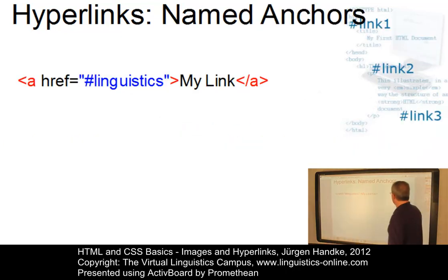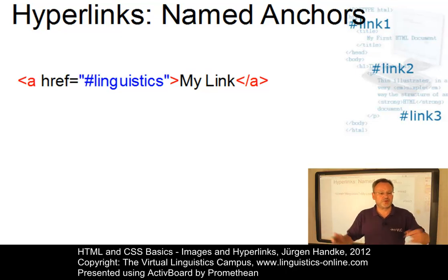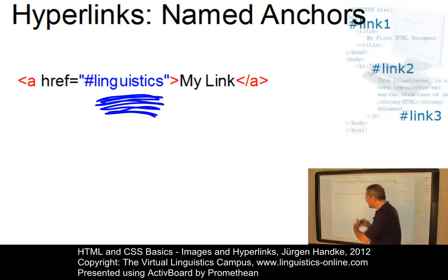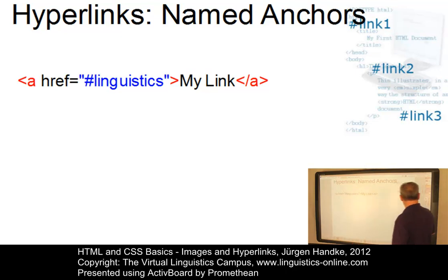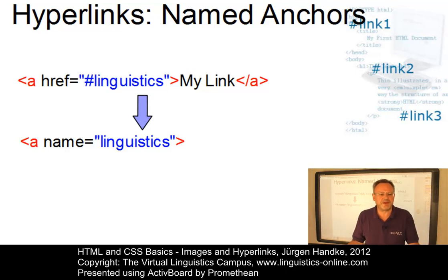Here's the last type of hyperlink: the so-called named anchor. Named anchors allow for the creation of links to specific points within the same HTML document. We create a hyperlink with an anchor name preceded by a hashtag symbol — for example, #linguistics. When this hyperlink is clicked, it moves the cursor to a position within the same document marked with a simple anchor tag containing the name without the hashtag. This principle is often used when a long page contains a table of contents where each item links to a text passage within the same document — like Wikipedia.